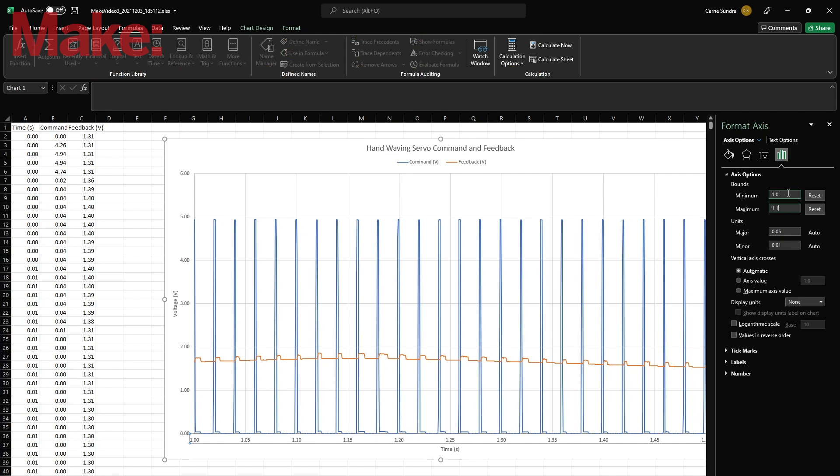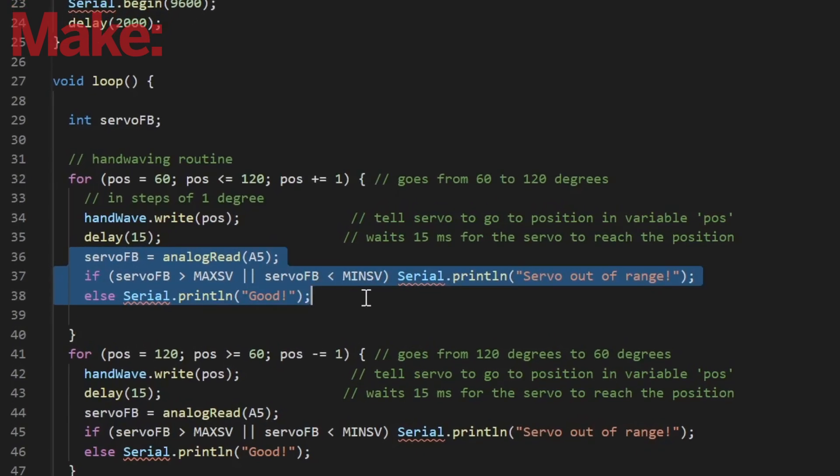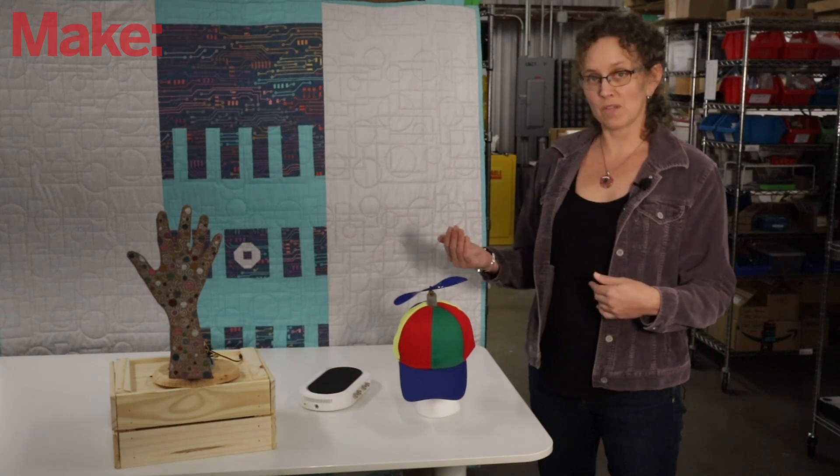If we were planning on using this signal for any kind of additional control, we now know that we'd have to filter it or otherwise account for the noise. But even without doing anything, we could still use it as a sanity check to confirm that our servo is broadly functioning within a specified range.